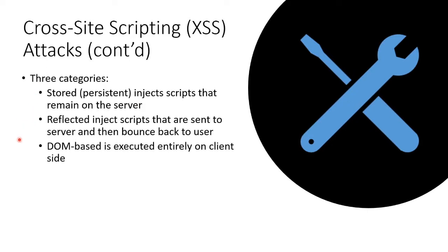There are three general categories of cross-site scripting. One is called stored or persistent XSS — we inject the script in our blog post and it stays on the server. Another is called reflected, where I manage to get something on a client who unknowingly tries to upload it to the server, which sends it back to the client. Because the client trusts the server, it will then execute it. Then there is DOM-based XSS, which is executed completely on the client and has nothing to do with a server at all.